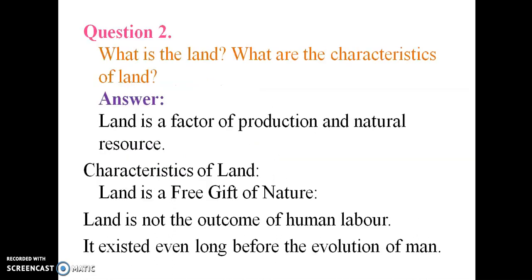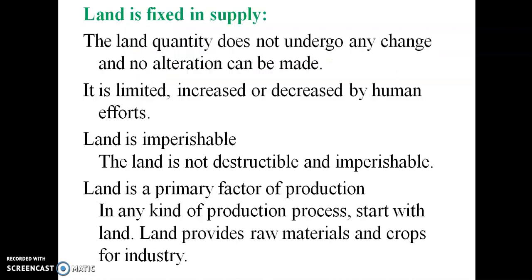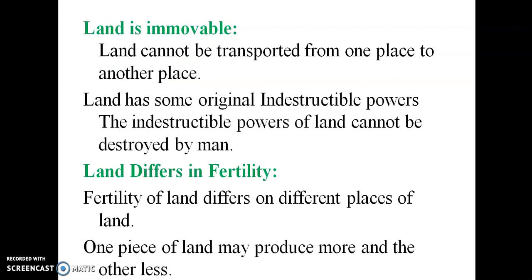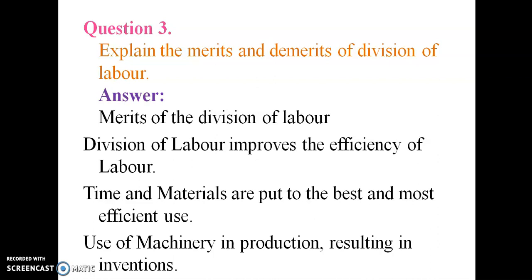What is land? What are the characteristics of land? Land is a factor of production and natural resources. The characteristics of land are: land is fixed, land is immobile, and land has differing fertility.